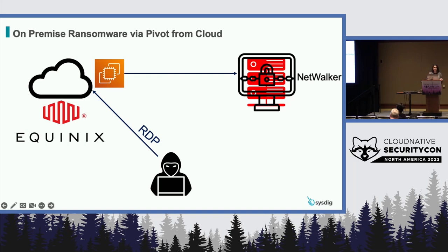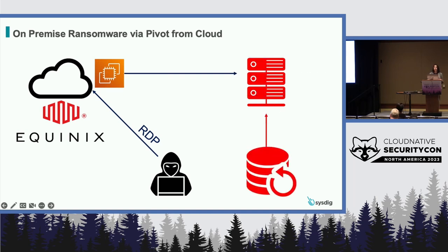Once they made it onto the on-premise system, the security policies picked up on their presence, and Equinix was actually able to contain this attack. Additionally, they had really good backups, so they were able to restore all data from their own backups without paying a ransom. Nobody wants this kind of attack to happen to them, obviously. But if a ransomware attack does happen, this is kind of the best possible outcome — you're able to contain the attack and restore from your own backups.